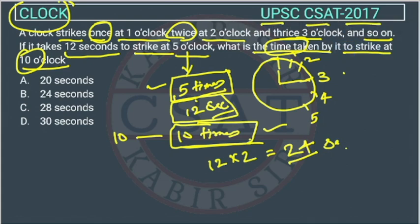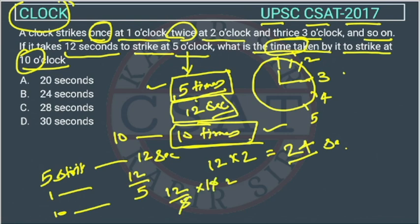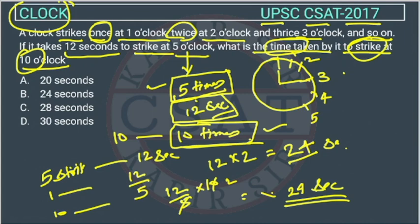Otherwise you can use the unitary method also. For 5 strikes it is taking 12 seconds, so for 1 strike it will take 12 upon 5, and for 10 strikes — because at 10 o'clock there will be 10 strikes — it will take 12 upon 5 into 10, which gives 24. So the answer is 24 seconds. He is asking what is the time taken to strike at 10 o'clock, so it will take 24 seconds. The answer is option B.